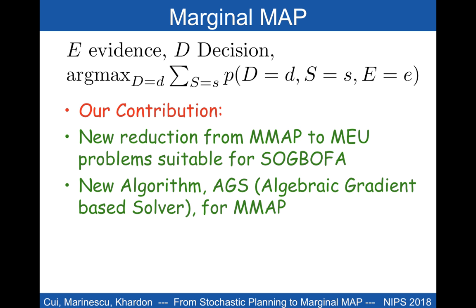With a few more details, this gives our third contribution: a new algorithm called AGS — the algebraic gradient-based solver for marginal map. AGS can be viewed as wrapping an approximation of sum inference as a differentiable function, and through that, solving max-sum inference using gradient ascent. Note that unlike other work that uses inference to solve planning, we use planning to solve inference.